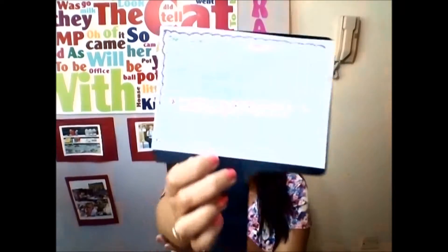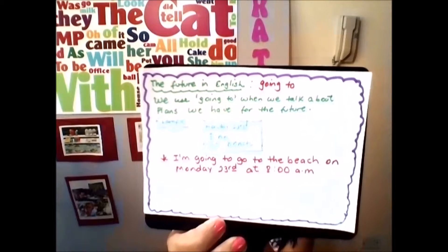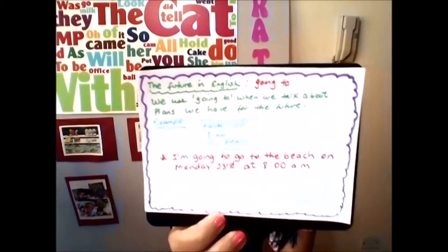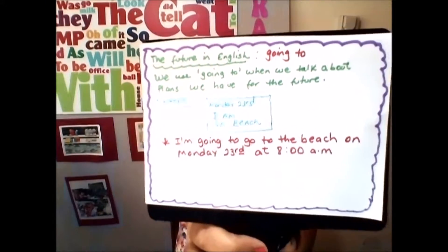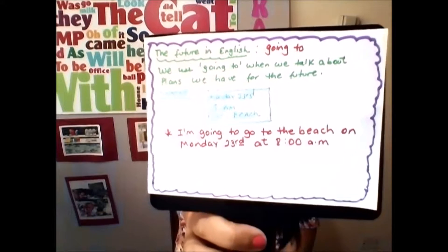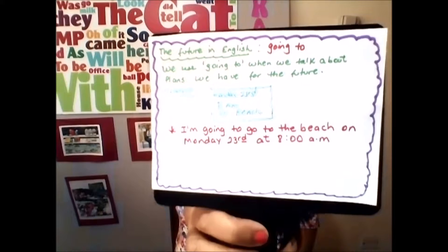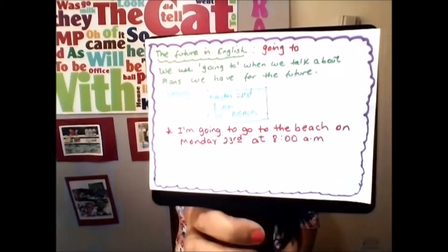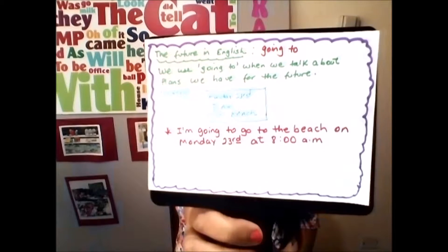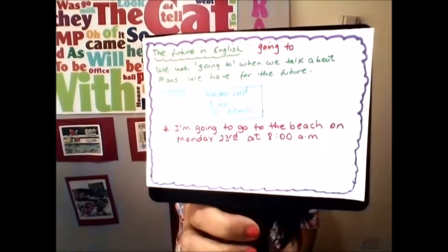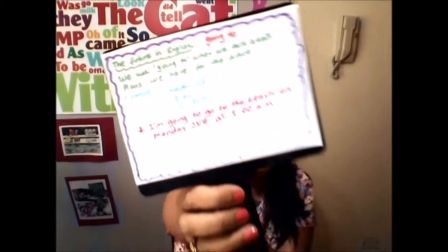Monday 23rd, 8 o'clock — go to the beach. Suponiendo que ese sea lo que tenemos agendado, lo que tenemos preparado en nuestra agenda para el lunes 23, a las 8 de la mañana vamos a ir a la playa. Ya que eso es un plan puesto en nuestra agenda, el tiempo verbal que vamos a utilizar es 'going to'. La oración queda: I'm going to go to the beach on Monday 23rd at 8 am.